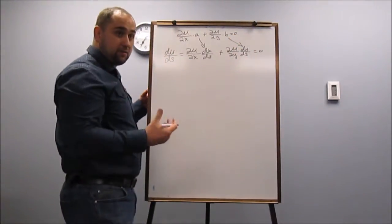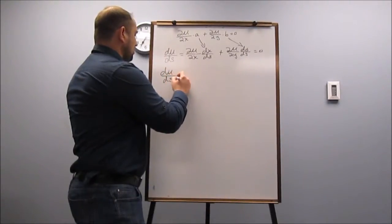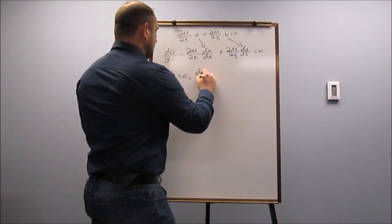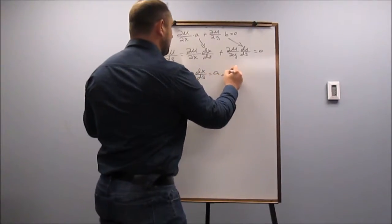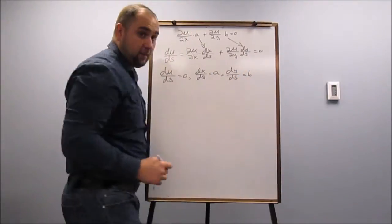So we really have three equations here. And that's DU over DS is equal to zero, DX over DS is equal to A, and DY over DS is equal to B.